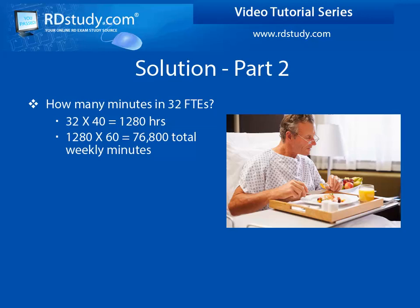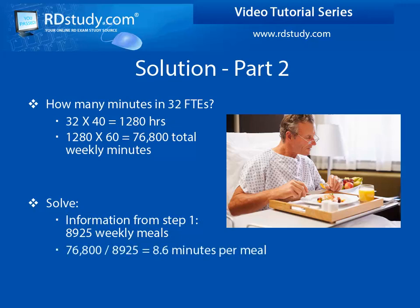Using this value, we can now determine how many minutes it takes to prepare each meal. Divide the number of minutes worked for the entire week by the number of meals you need to prepare for the entire week to get your answer. 76,800 divided by 8,925, and you end up with your team taking 8.6 minutes to make each meal.